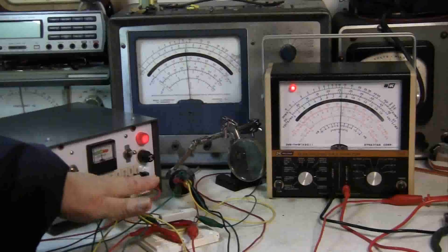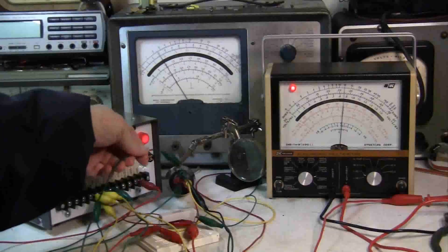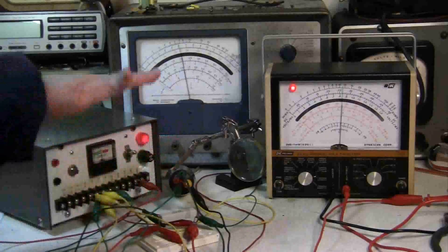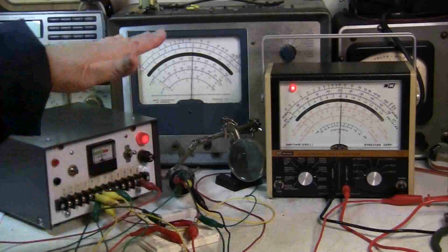So this grid wire right here, that goes right up here to the control grid of this tube, is controlling that 90 volts with a very small amount of voltage.